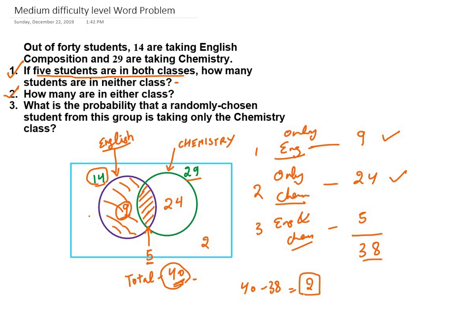Third question is: what is the probability that a randomly chosen student from this group is taking only the Chemistry class? When it comes to probability, we have to basically find out number of favorable cases.